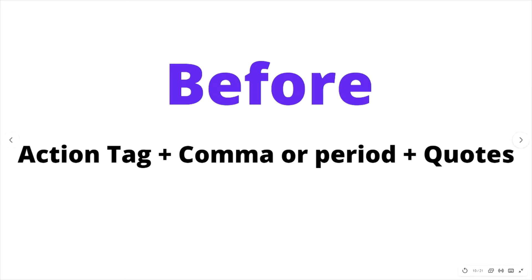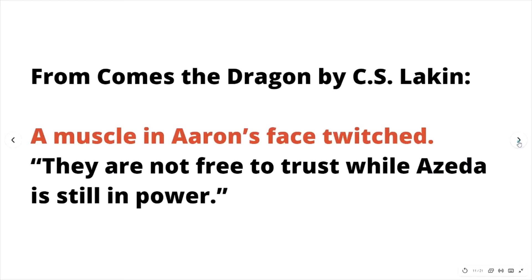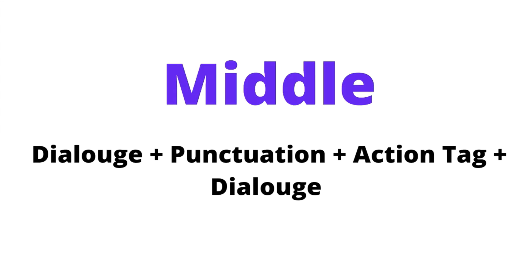Let's talk about how to punctuate an action tag. You can put the action tag before the dialogue — action tag, some kind of punctuation, then the dialogue. Here's an example from 'Come the Dragon' by CS Lakin: 'A muscle in Aaron's face twitched. They are not free to trust while Azeta is still in power.' You can see the action tag highlighted in red font. You can also put the action tag in the middle, sandwiched between two lines of dialogue — either interrupting dialogue or placing a short pause for a behavior or gesture.